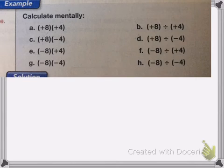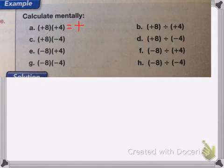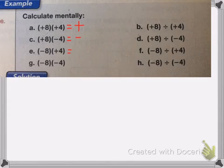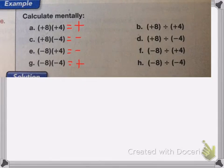Remember, if I have two positives, that means my answer is going to be positive. If I have a positive and a negative, negative always wins, so my answer will be negative. Negative and positive, my answer will be negative. Now, if I have two negatives, my answer is positive. Two negatives make a positive.